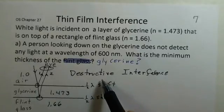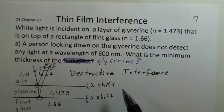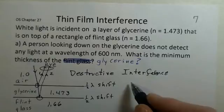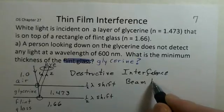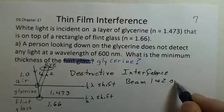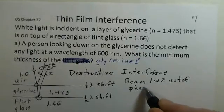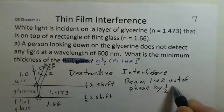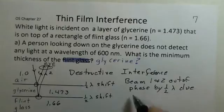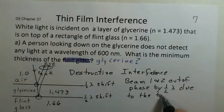Because both reflections involve a half-wavelength phase shift, that is not going to be the cause of the two beams being out of phase. Instead, beam one and beam two are out of phase by half a wavelength due to the total path traveled in the glycerin.